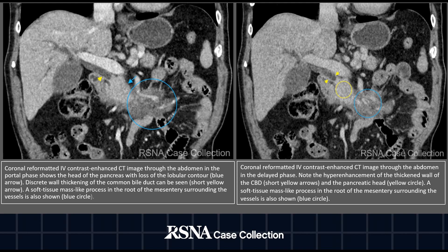Here we have two contrast-enhanced CT images in the coronal plane, again acquired in the portal phase on the left and in the delayed phase on the right, where the yellow arrows point to the enhancement of the dilated common bile duct wall. The yellow circle marks the enhancement of the pancreatic head.